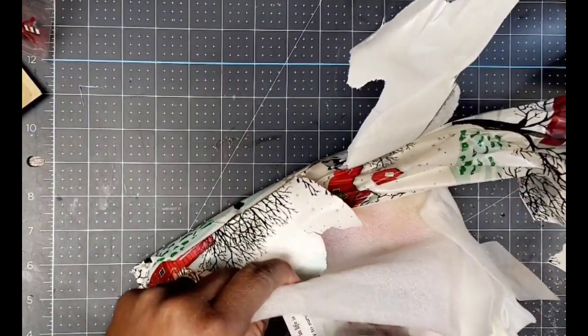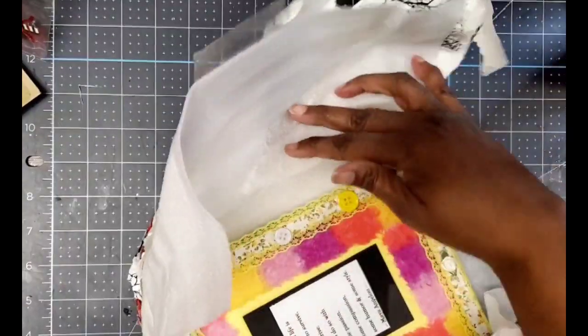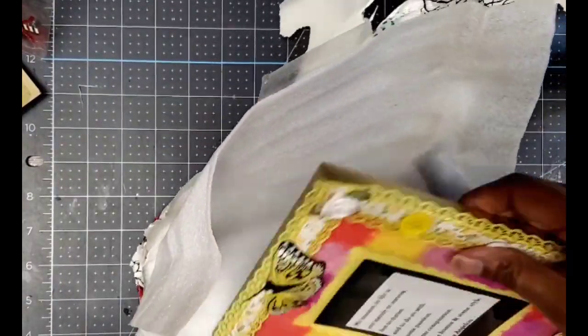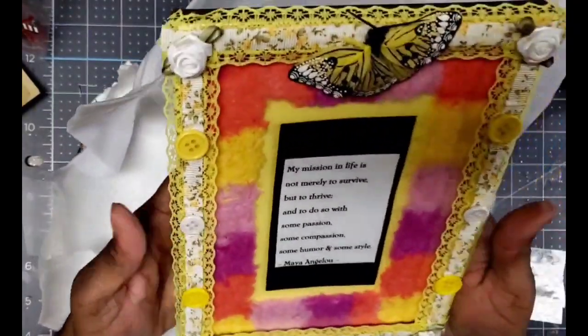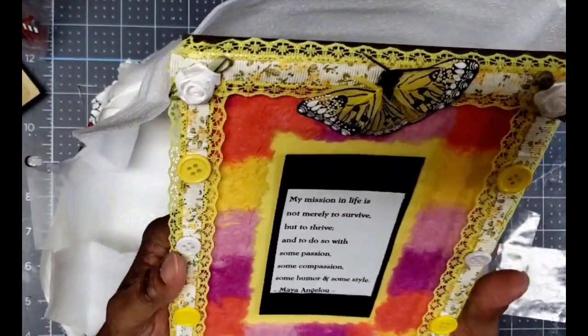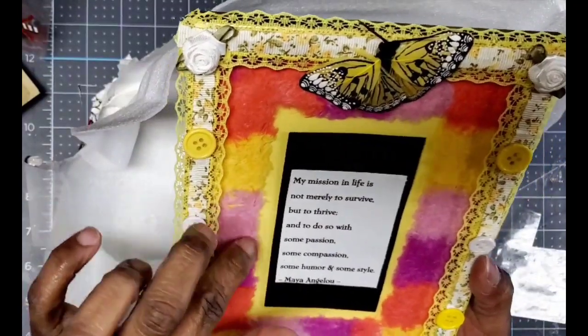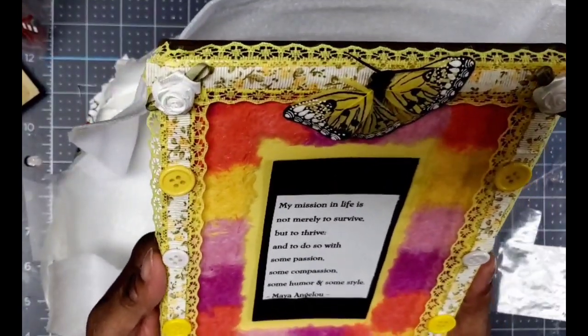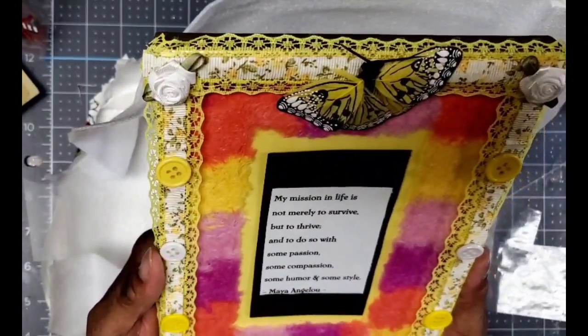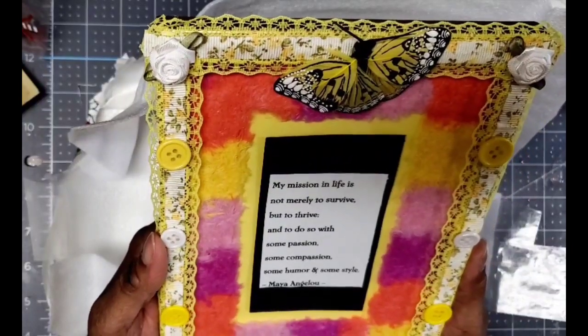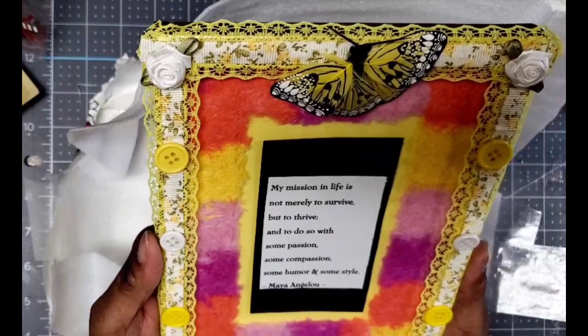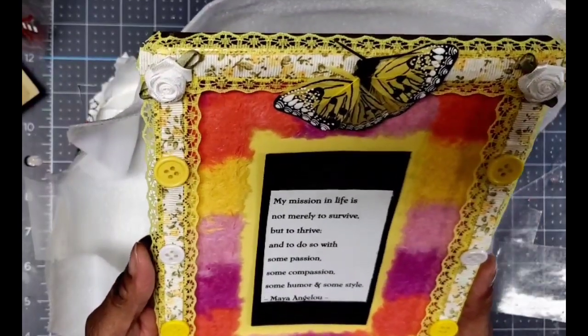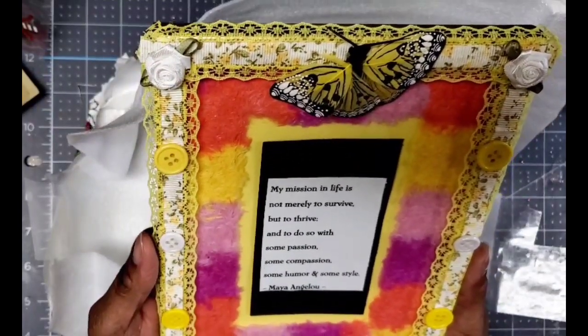Oh, she made me a frame! Oh, look at that. That is so pretty. It's so happy. It looks like there's like a fur lining in here. It says, 'My mission in life is not merely to survive, but to thrive, and to do so with some passion, some compassion, some humor, and some style,' by my hero, my icon, my everything.